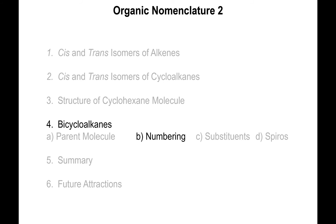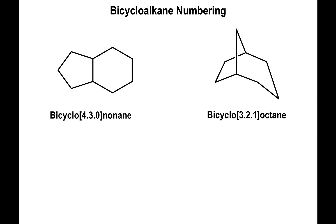When you start having substituents you have to assign numbers, and this is where things can get a little complicated. But as long as you follow the format I'm about to present, you'll find it's not as complicated as it may seem at first. Let's start with these molecules: bicyclo[4.3.0]nonane and bicyclo[3.2.1]octane. You always start at a bridgehead — one of the bridgeheads is going to be number one — and then you go in the direction of the ring that has the most carbons.